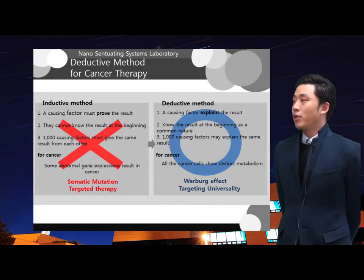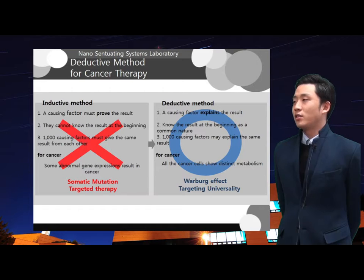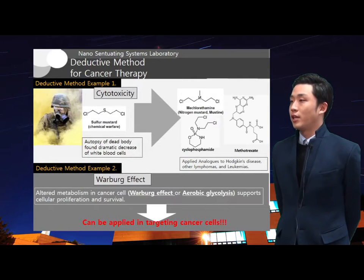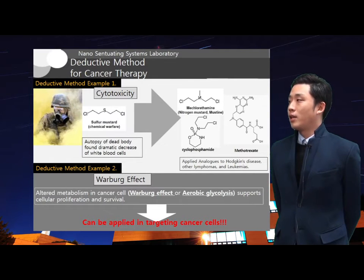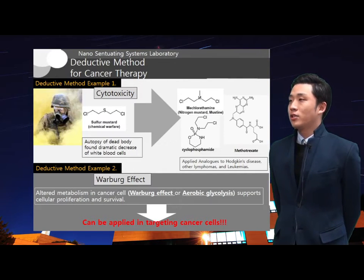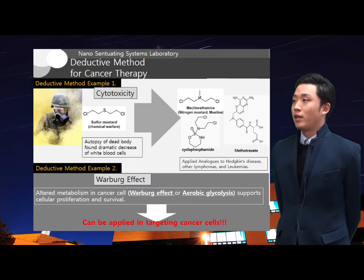If we apply it to cancer therapy, previous somatic mutation-targeted therapy — which seeks and fixes abnormal gene expression — is based on the inductive method. However, since all cancer cells have different metabolism compared to normal cells, targeting cell metabolism can be a good example of the deductive method. To help your understanding, one good example of how deductive methods are used in biopharmaceuticals: sulfur mustard is well used in chemical warfare. Autopsy of dead bodies found a dramatic decrease in white blood cells, and analogues were applied to Hodgkin's disease and other lymphomas. Now let's get back to the topic and see how the deductive method can be applied in general cancer therapy.